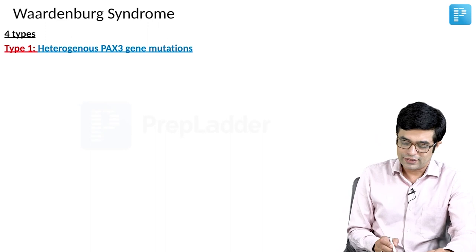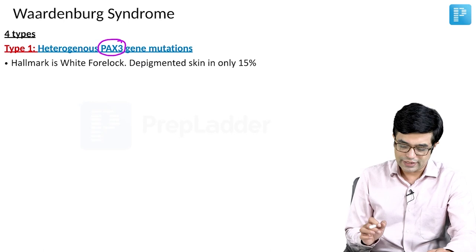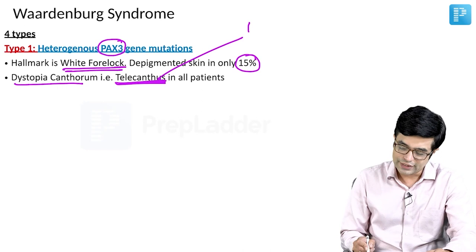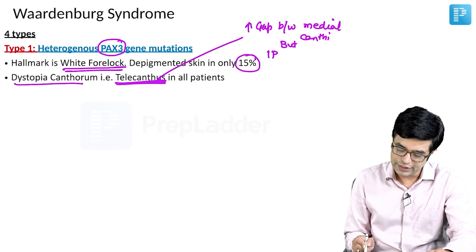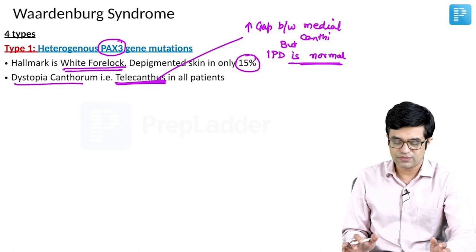There are four types of Waardenburg syndrome. Type 1 has heterozygous gene mutations in the PAX3 gene. It is characterized by white forelock, and depigmented skin is present in only 15% of cases. Dystopia canthorum, that is telecanthus, is present in all patients — there is increased gap between the medial canthi, but interpupillary distance is usually normal. This is present in almost 100% of these patients.